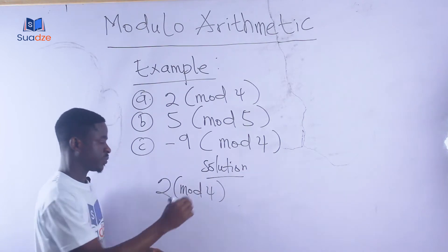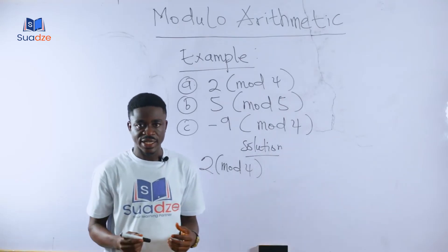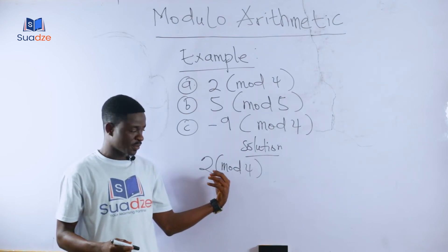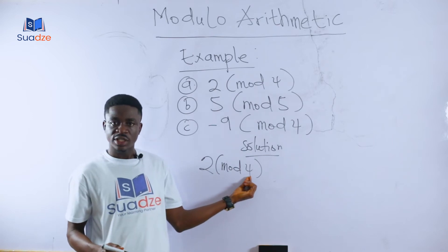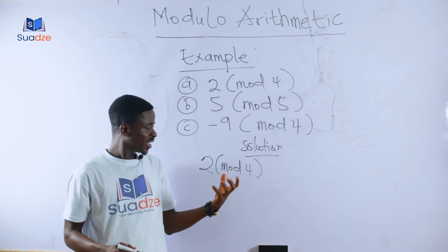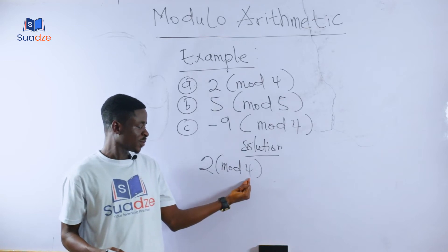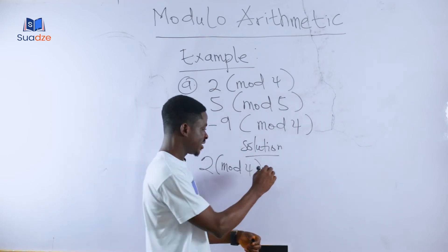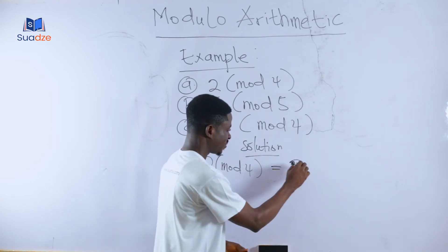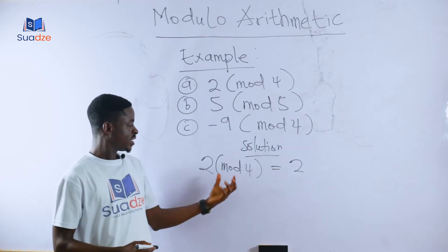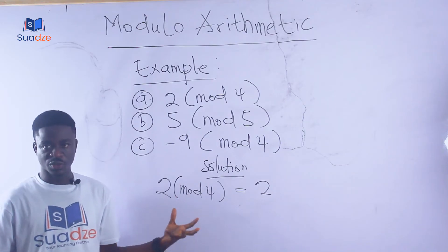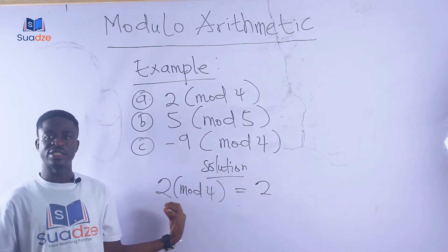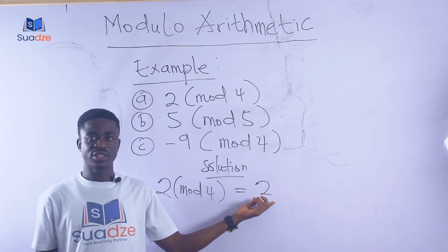For 2 modulo 4, the integer is 2 and the modulo number is 4. The rule is: anytime the modulo number is bigger than the integer, the answer is the integer. So 2 modulo 4 equals 2.